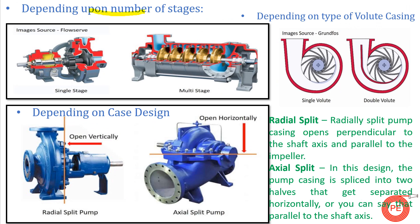Depending upon number of stages: for high head generation — especially in boiler applications where high pressure requirements exist — it is not possible for a single impeller to generate sufficient head, so we go for multi-stage pumps. A single stage pump has one impeller, while multi-stage pumps have impellers connected in series. As fluid passes from one impeller to the next, the head increases, generating high head at the discharge.